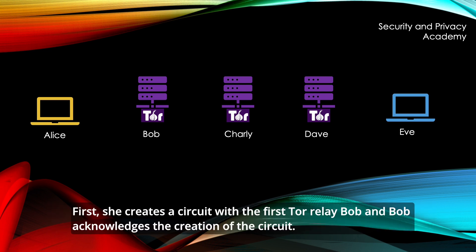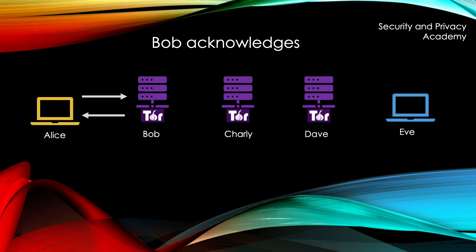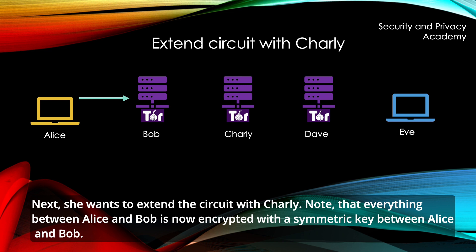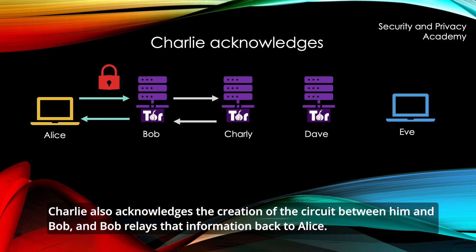First, she creates a circuit with the first TOR relay, Bob, and Bob acknowledges the creation of the circuit. Next, she wants to extend the circuit with Charlie. Note that everything between Alice and Bob is now encrypted with the symmetric key between Alice and Bob. Charlie also acknowledges the creation of the circuit between him and Bob, and Bob relays that information back to Alice.